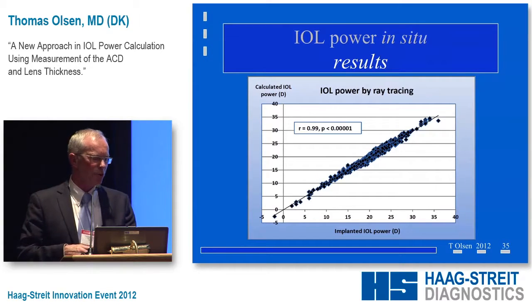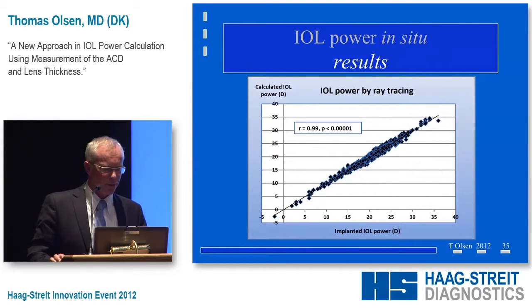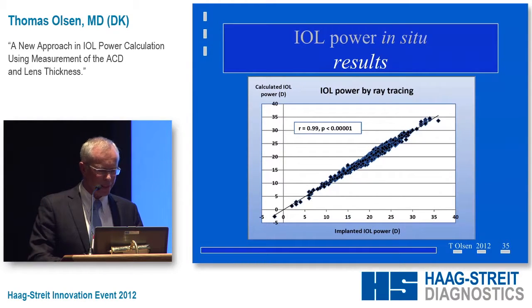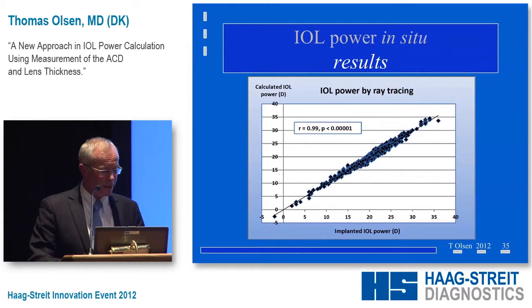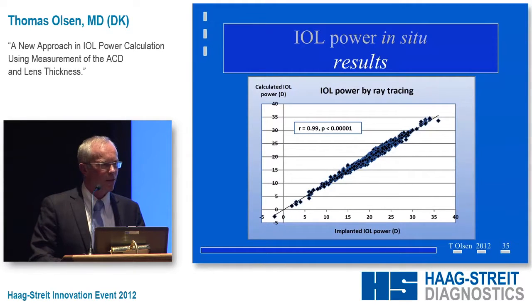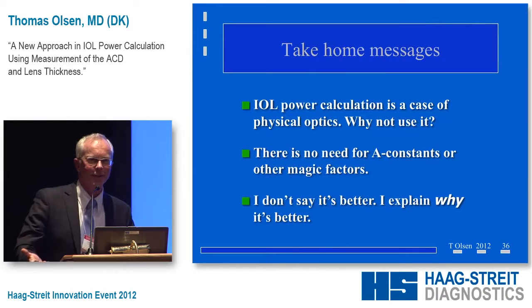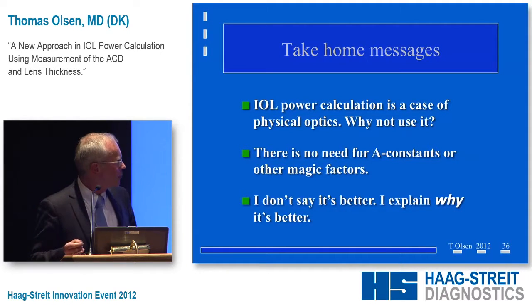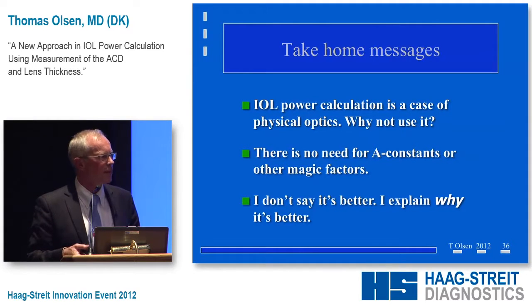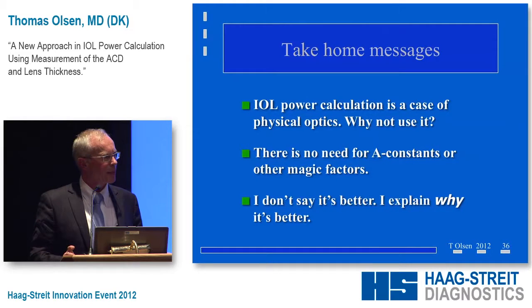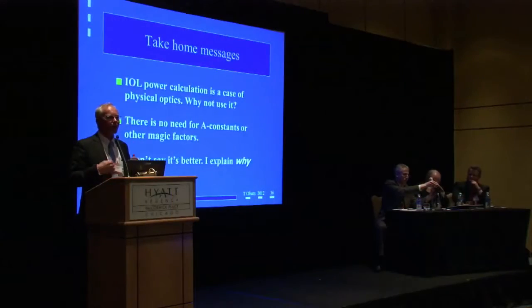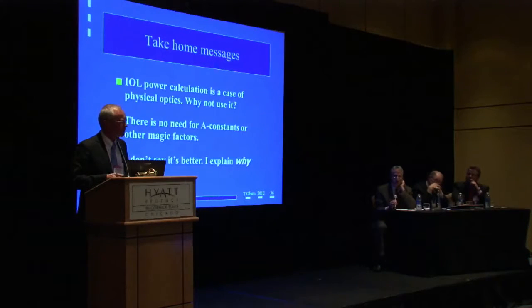To show that it really works: plotting the implanted IOL power on the x-axis and the calculated IOL power on the y-axis, from negative IOL powers up to almost 40 diopters, there is a very nice correlation going through the origin. So we can do this — it works. Why don't we use physical optics more often? We don't have to use thin lens formulas with all the fudging. I dislike A constants because they're not telling the truth. I would like the concept to be truly anatomic in nature. I've tried to explain not only that it's better, but why it's better.